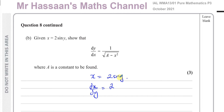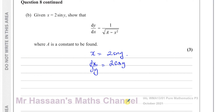We differentiate x = 2 sin y with respect to y. The differential of sine of something is cosine of the same thing, so dx/dy equals 2 cos y. Now we want dy/dx, which would be 1 over 2 cos y — but we're not finished because we want it in terms of x, not y. So I'll leave it in this form for now and take the reciprocal at the end once I've expressed everything in terms of x.